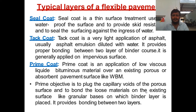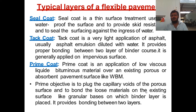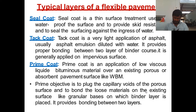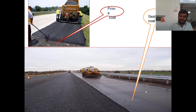Prime coat: provided between the base course and binder course. It is an application of low viscosity liquid bituminous material on an existing porous or absorbent pavement surface like water-bound macadam. Its prime objective is to plug capillary voids of the porous surface and to bond the loose materials on the existing granular base surface on which the binder layer is placed.